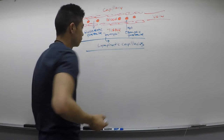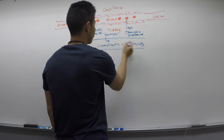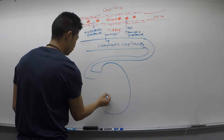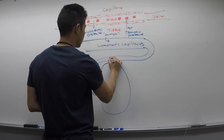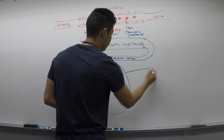What the lymph is going to do is enter into our lymphatic capillaries. Our lymphatic capillaries are going to take this lymph fluid to a region known as the lymph node. The vessel carrying lymph to the lymph node is known as our afferent vessel, and then we're going to have vessels connecting on the other side known as our efferent vessel.